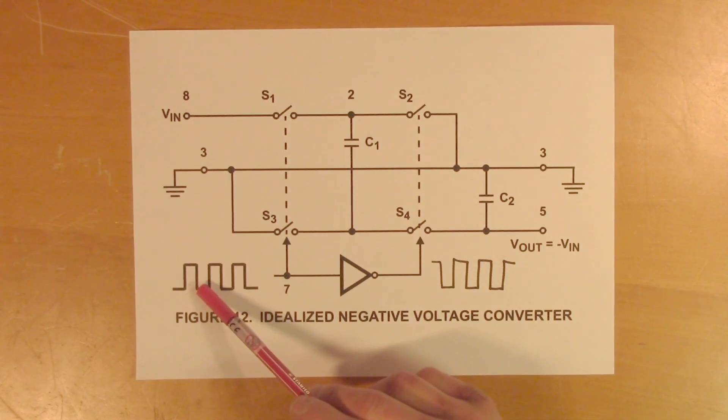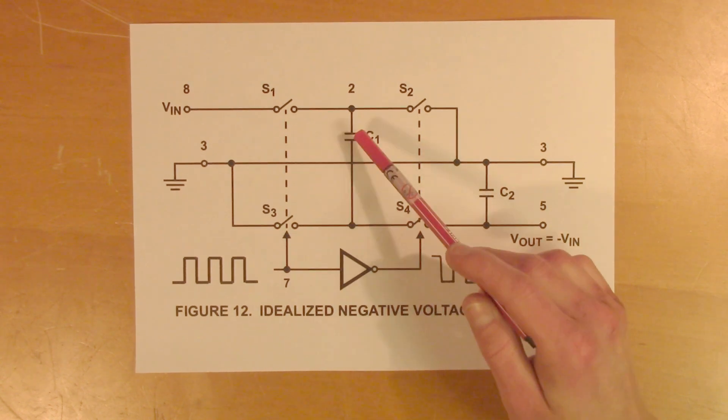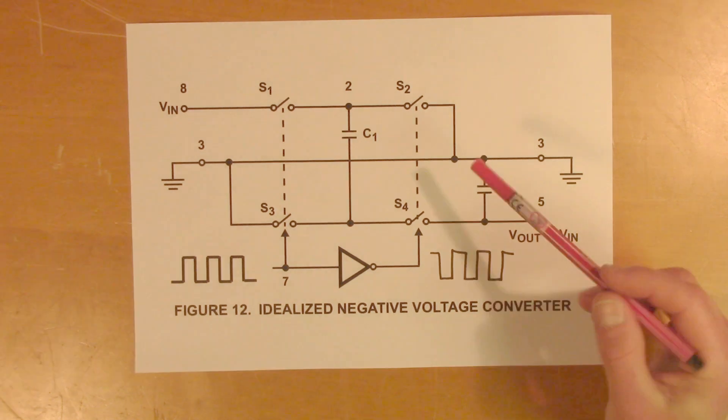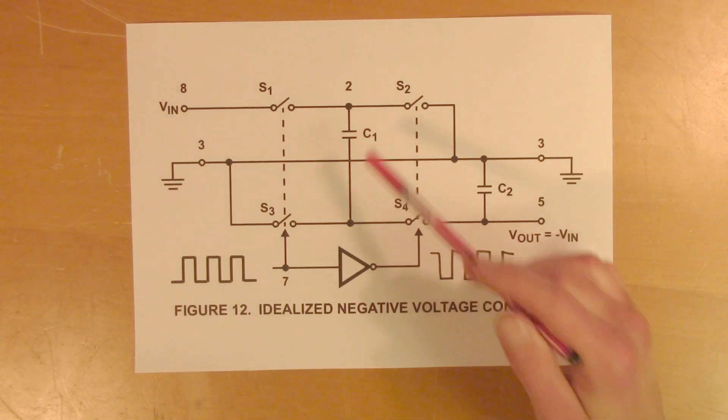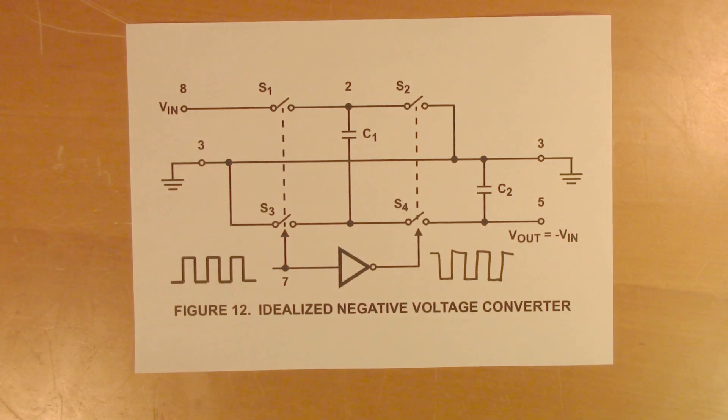In the second part of the cycle, the reference ground will switch from the negative pin of the capacitor to the positive pin of the capacitor. Which means that the capacitor will now have minus on its negative pin in reference to ground. And that is the voltage that we want to extract.